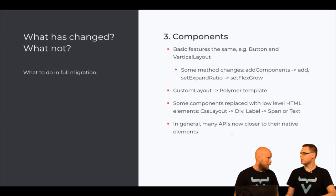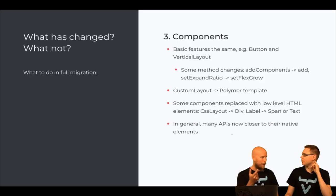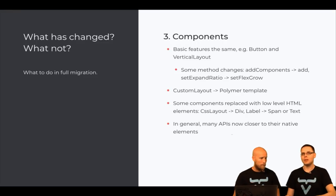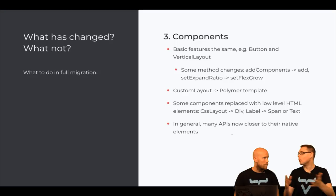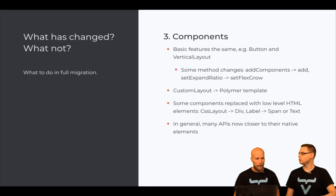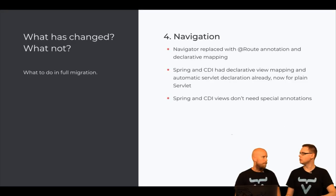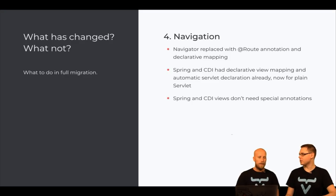With custom layouts you'll use Polymer templates, which are more powerful. Some components are 'missing' — Label exists but is aligned with HTML semantics, so it's the label tag for field names. Instead, use Span for inline text or the Text component for plain text nodes. In general, many APIs are coming closer to the web while still letting you do everything in Java.